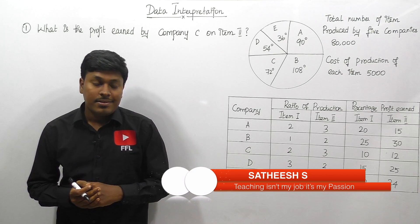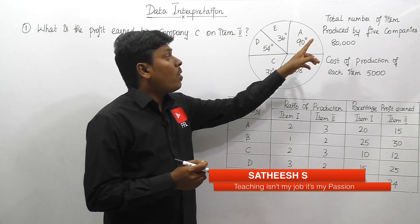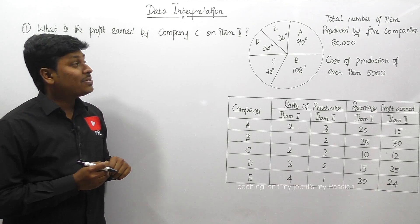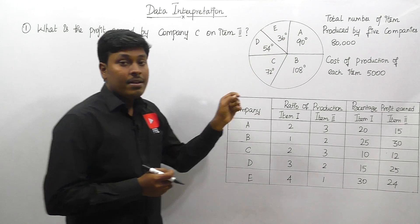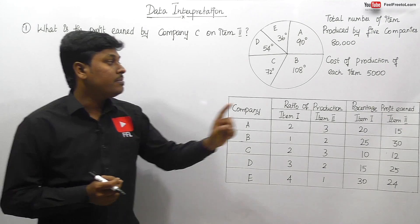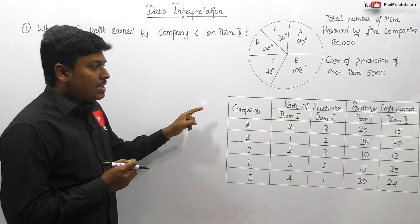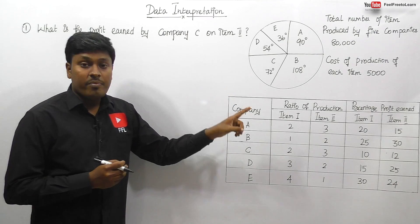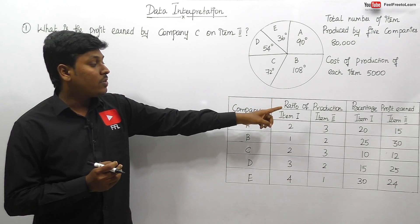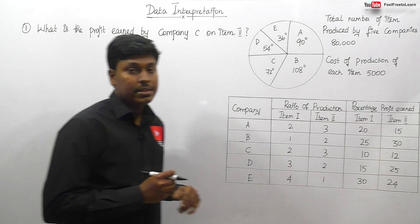Moving on to DI number nine — a pie chart and a table chart are given. The total number of items produced by all five companies is 80,000 and the cost of production of each item is 5,000. There are five different companies, A to E. All values in the pie chart are given in degrees. The table shows the ratio of production for item 1 and item 2, and the percentage profit earned for each item.